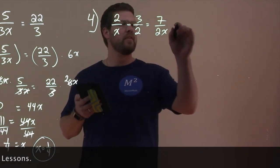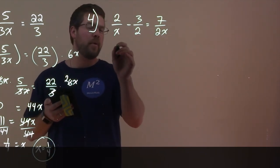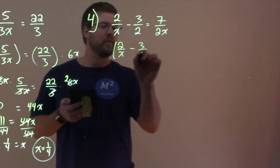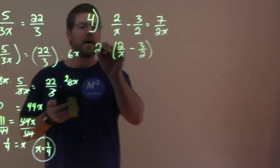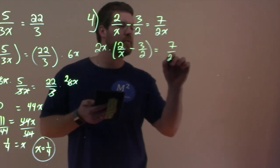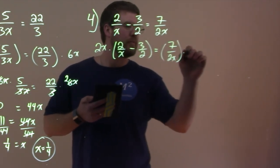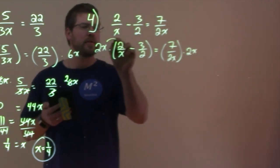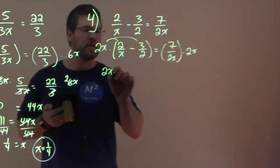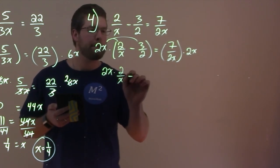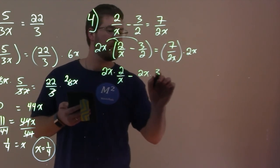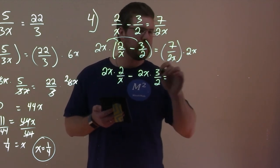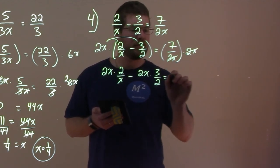If we multiply all parts by 2x, we have 2 over x minus 3 halves multiplied by 2x, and 7 over 2x times 2x. We distribute to both parts: 2x times 2 over x minus 2x times 3 over 2. On the right-hand side, the 2x's cancel, leaving us with just 7.